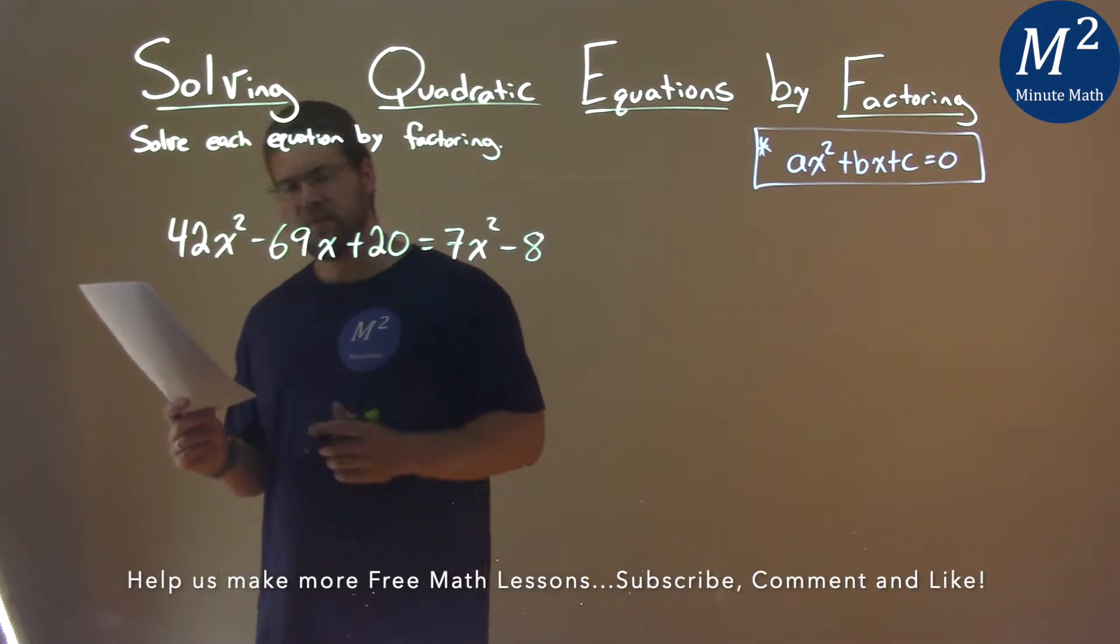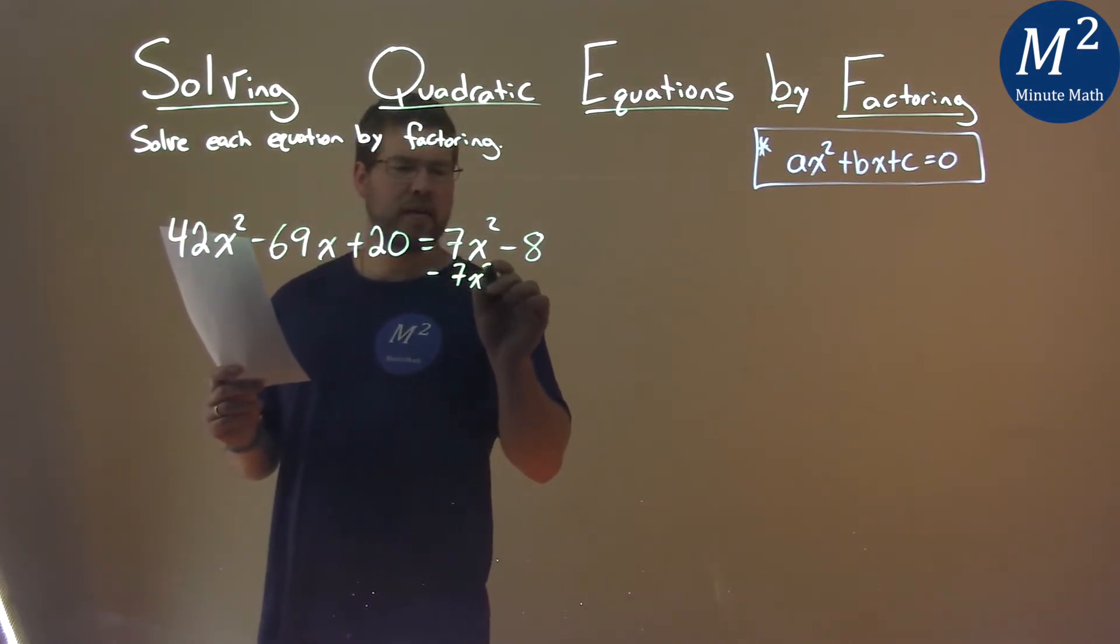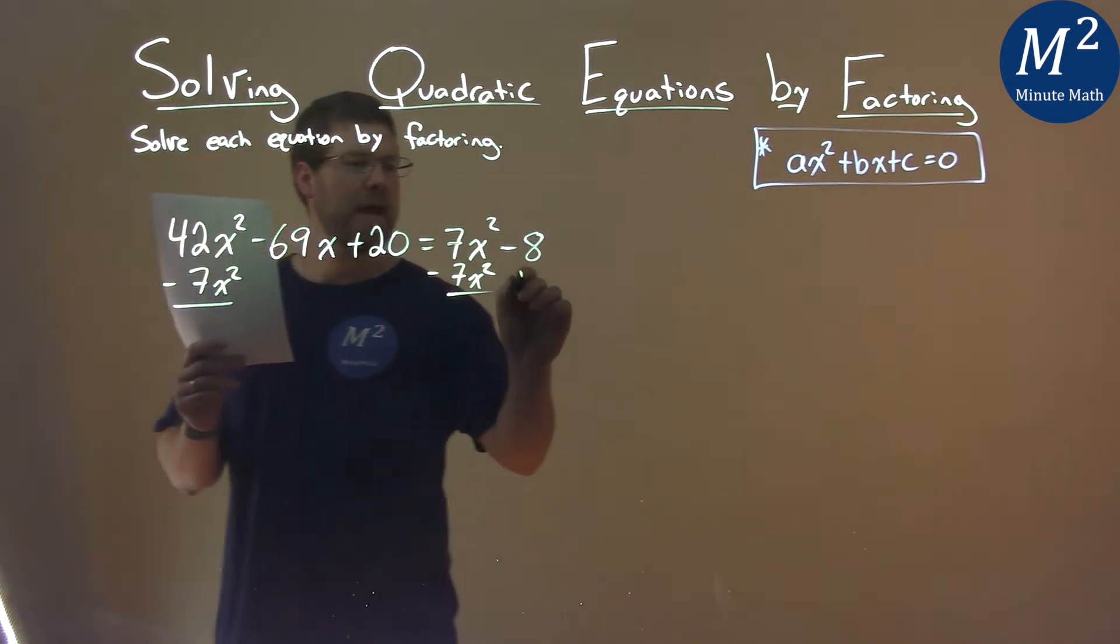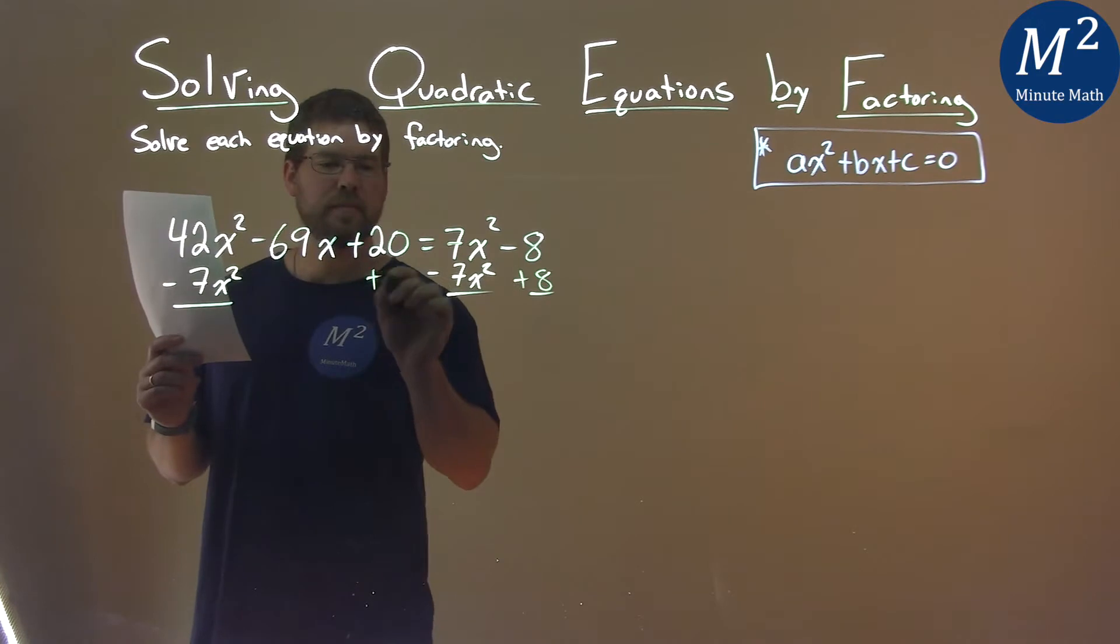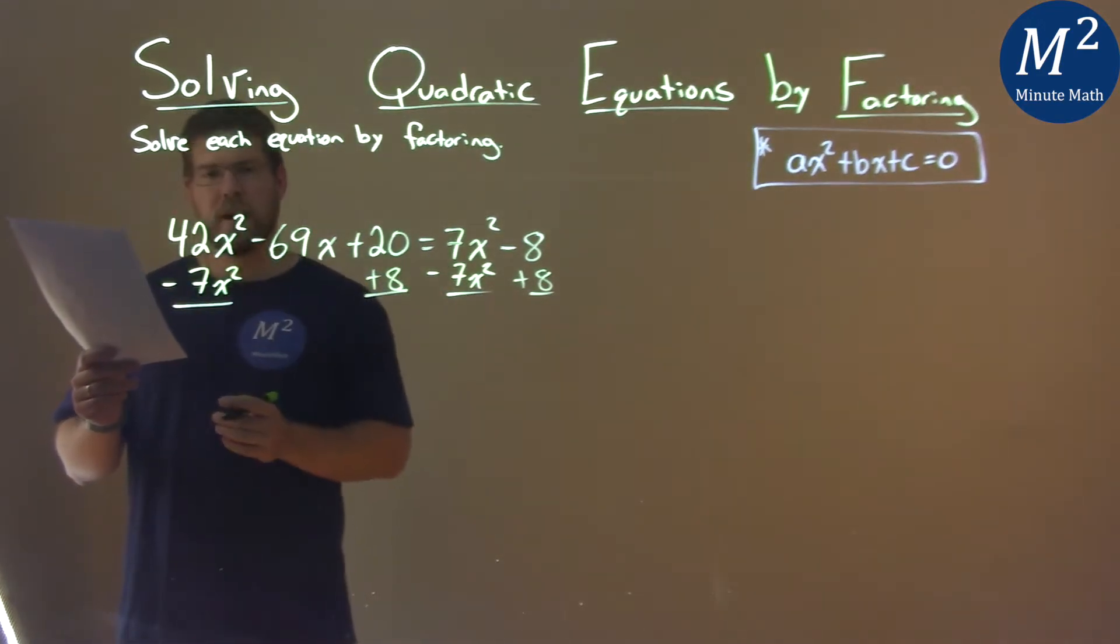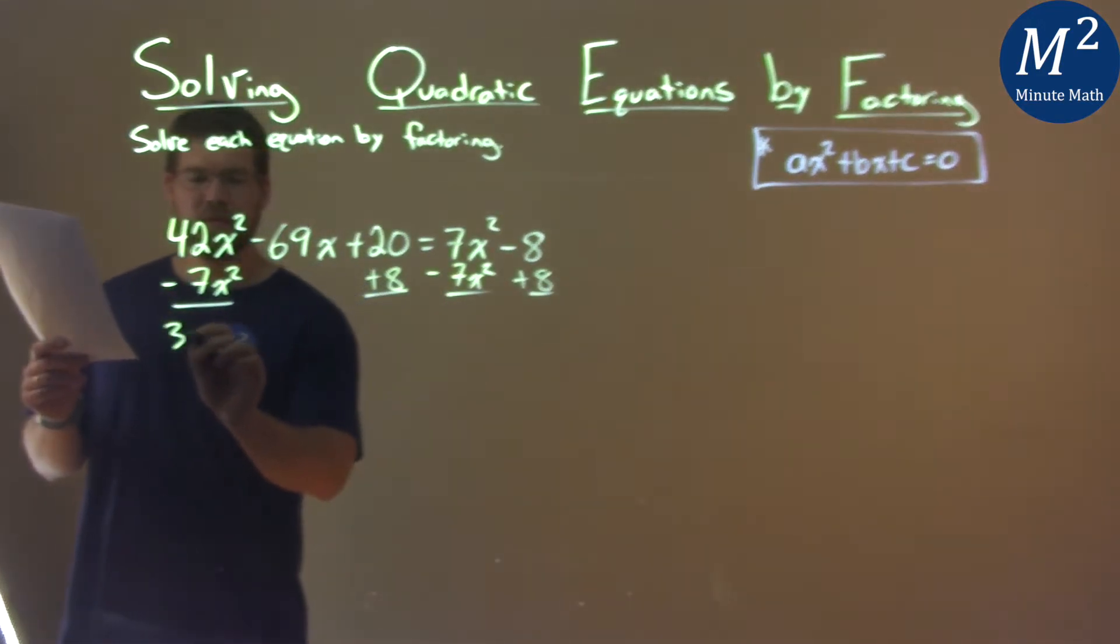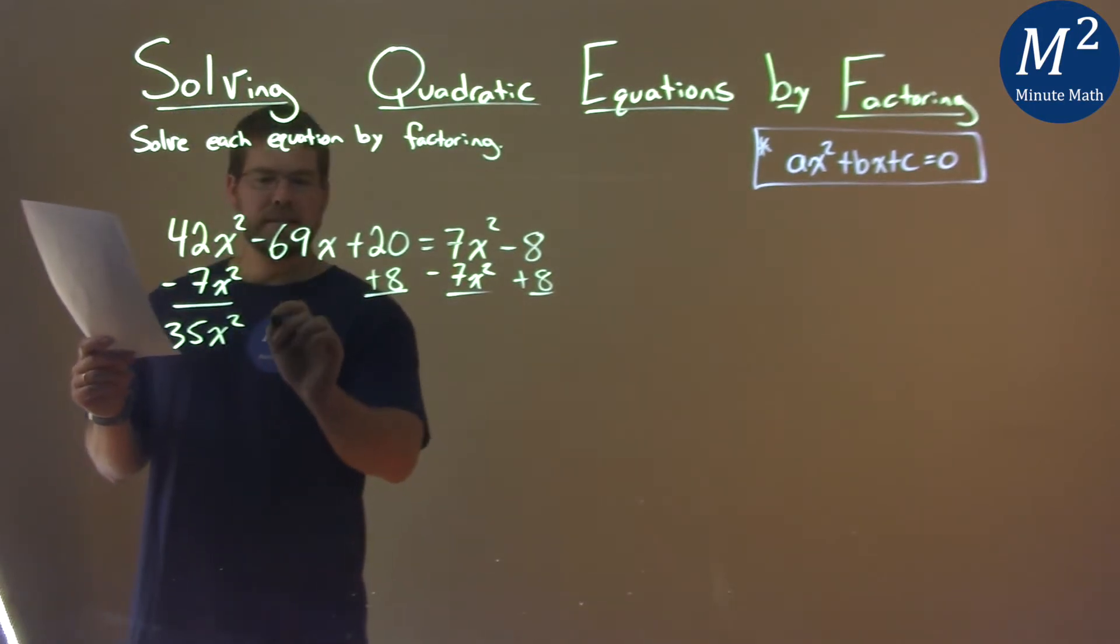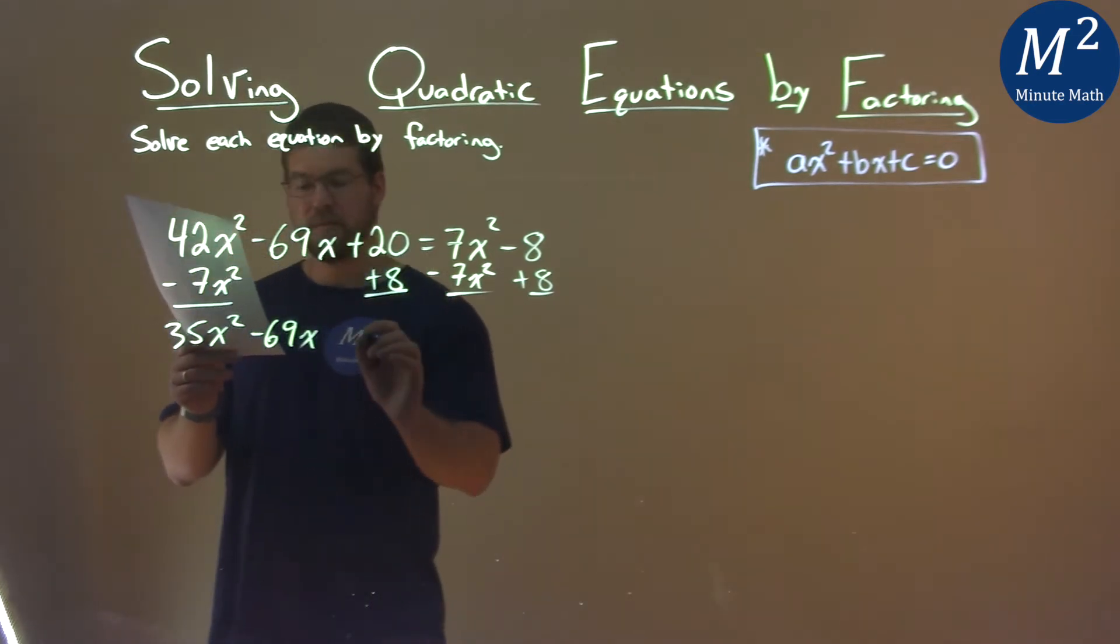Let's bring everything to the left-hand side. We subtract 7x squared and add 8 to both sides. What happens? Well, 42x squared minus 7x squared is 35x squared. The minus 69x goes down, and then 20 plus 8 is 28.